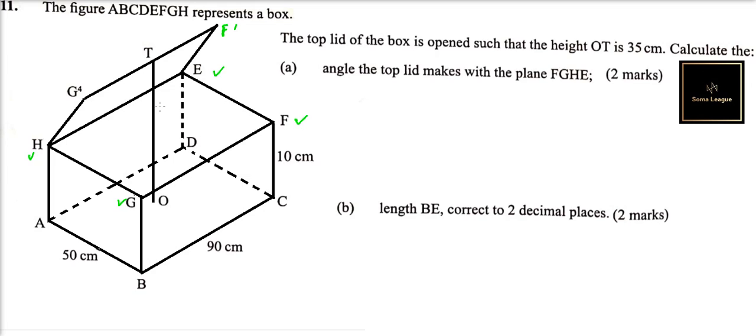That's the angle between two planes. The angle between two planes, when you are doing three dimension in form 4, is the angle between the lines which are perpendicular to the two planes and makes an angle of 90 degrees with the line of intersection.